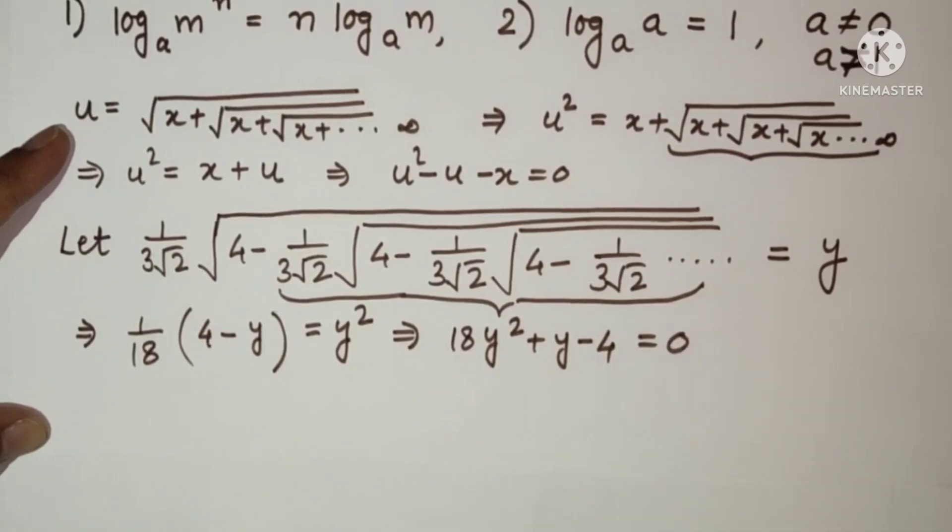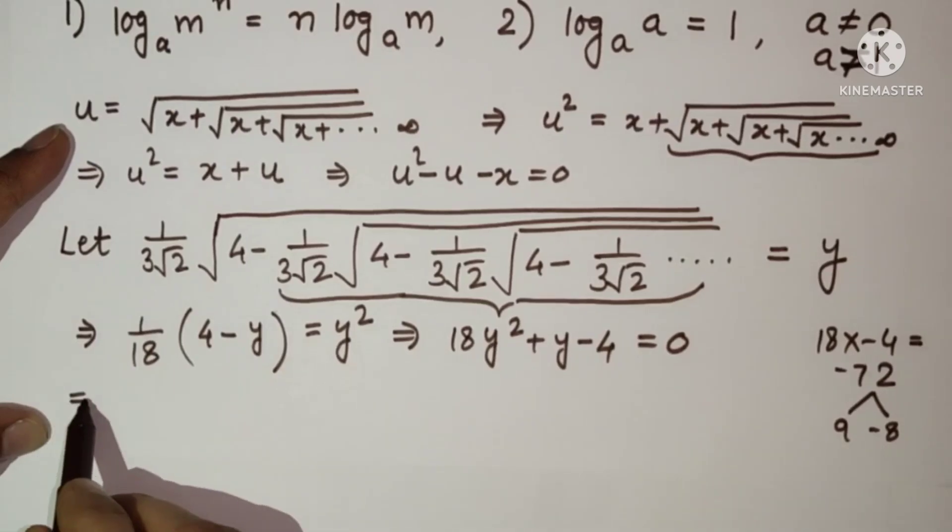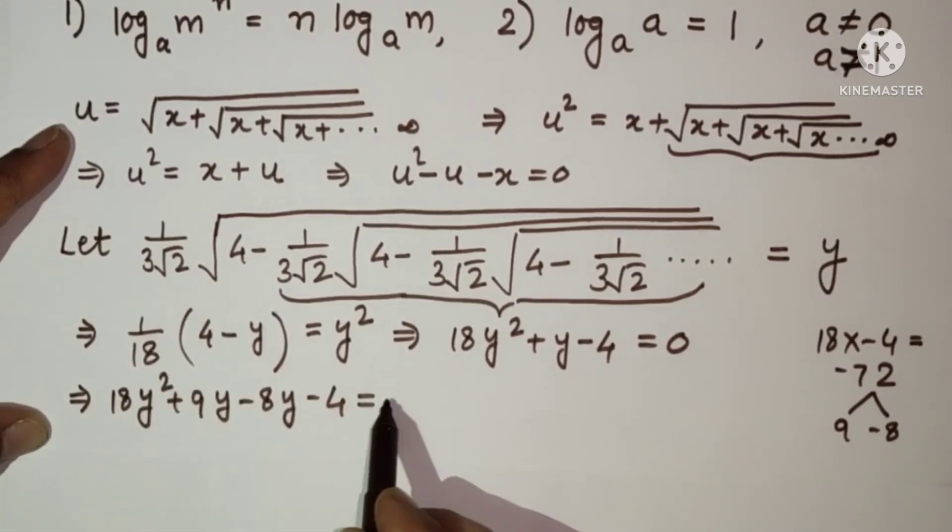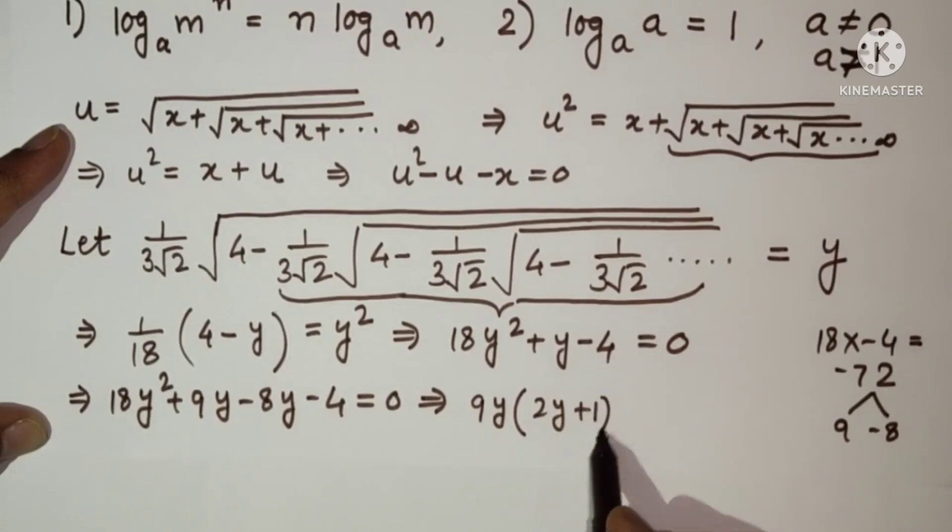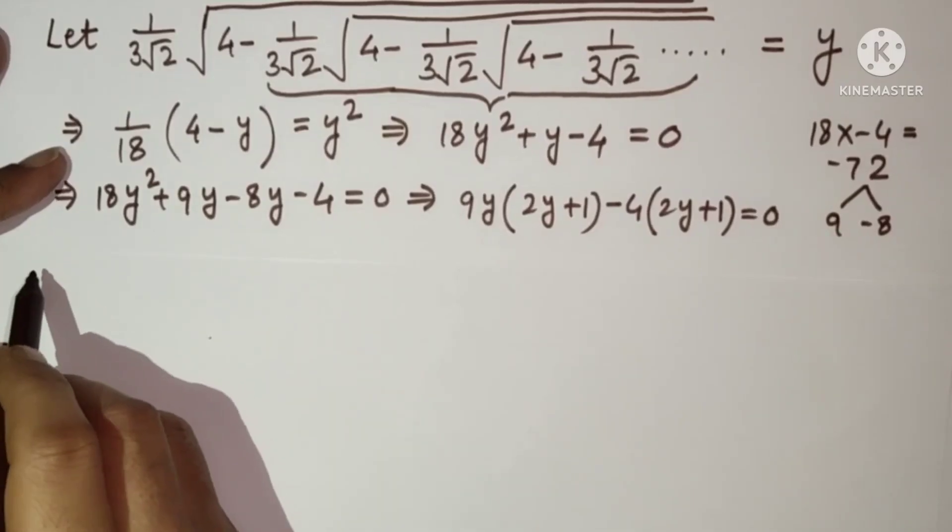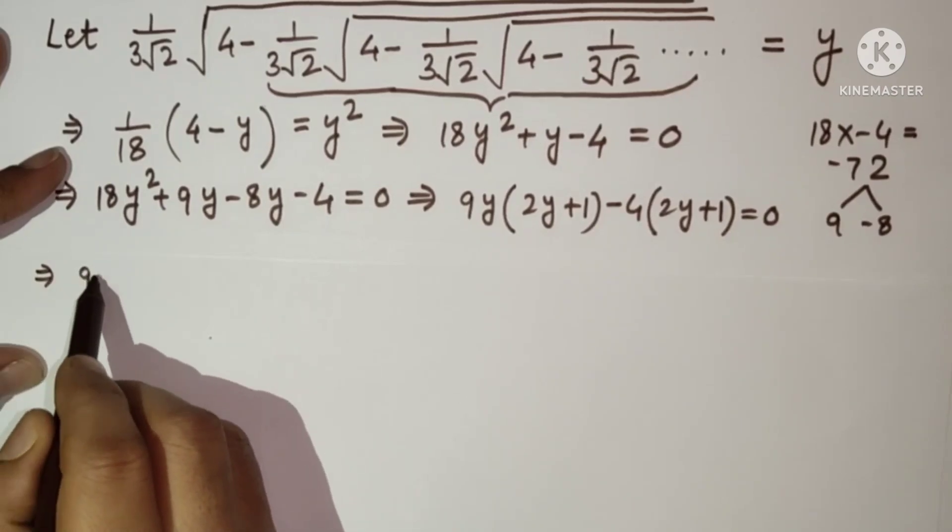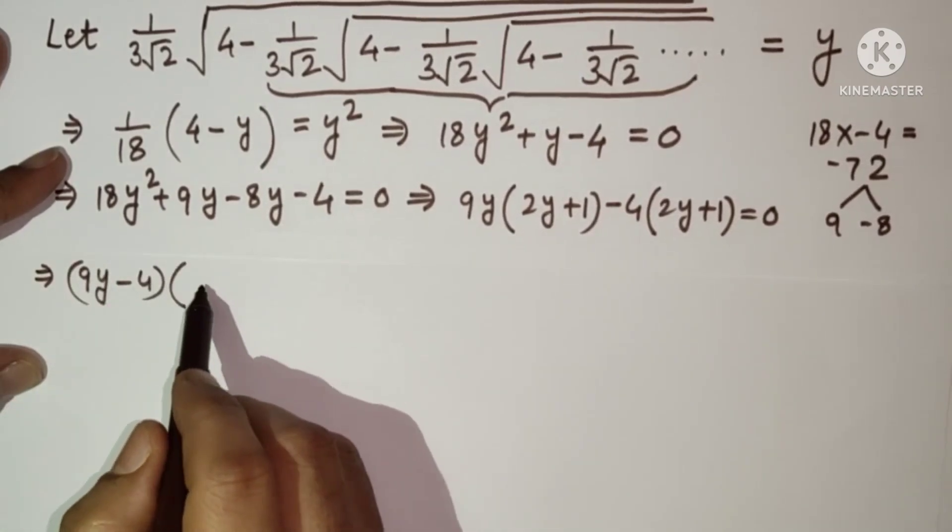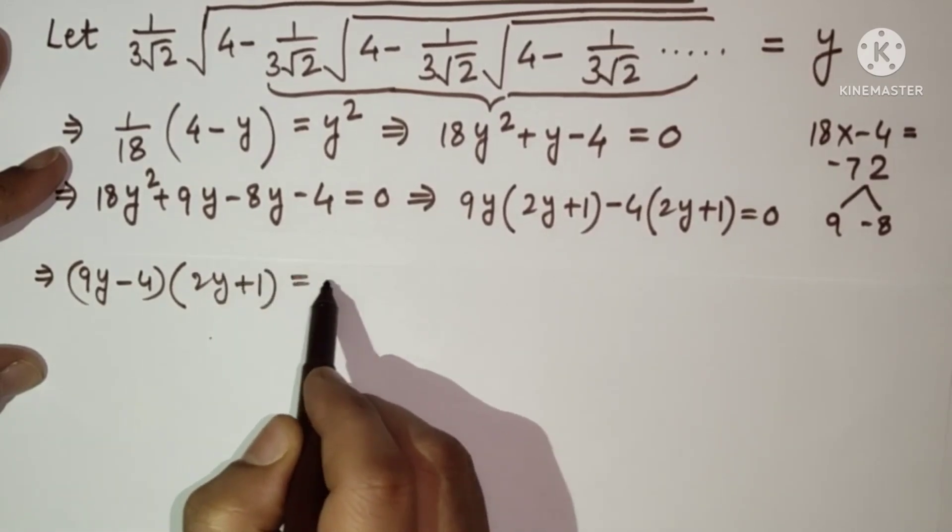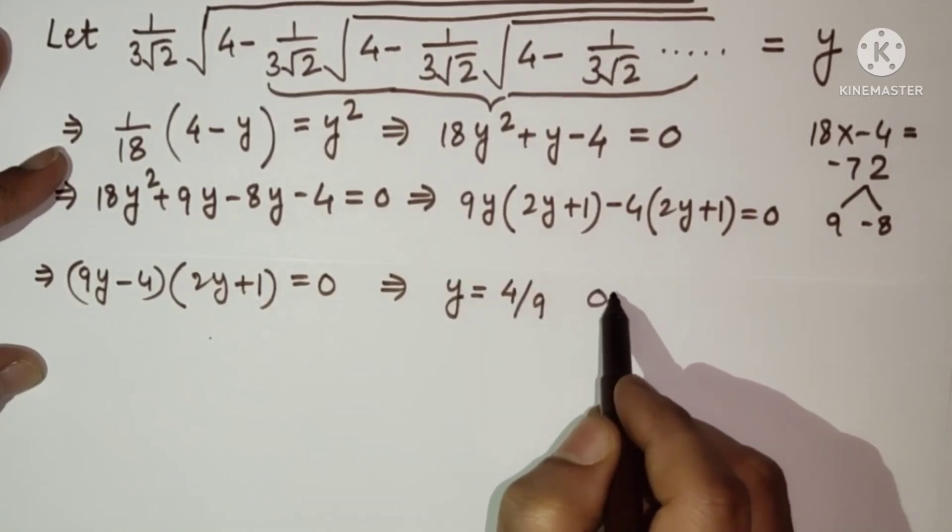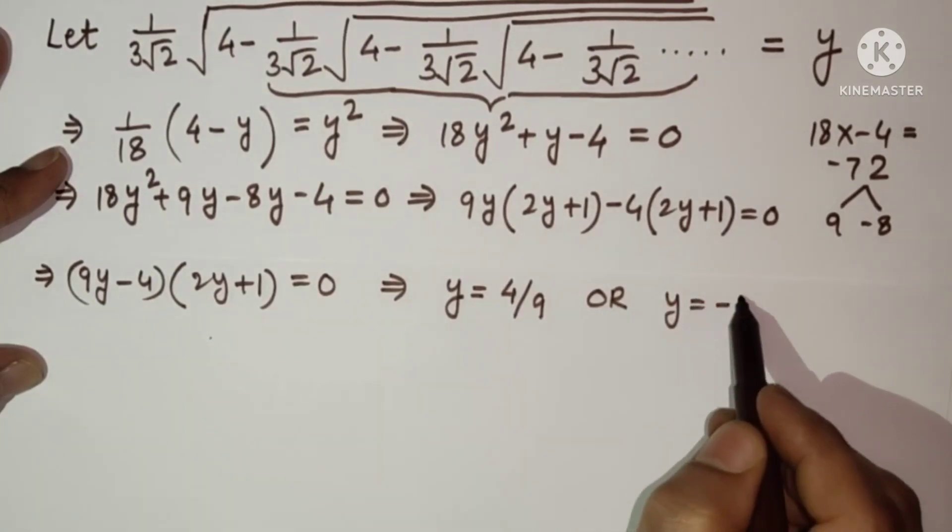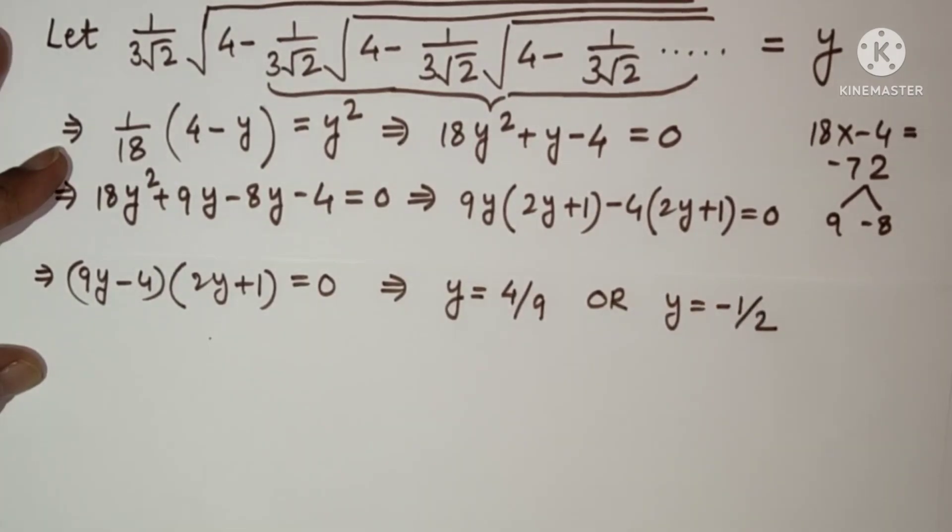So 18 into minus 4 will give you minus 72 and the two factors. So splitting the middle term: 18 y square plus 9y minus 8y minus 4 is equal to 0, which gives 9y common 2y plus 1. So we found 9y minus 4 in one bracket, 2y plus 1 in other bracket is equal to 0, which gives y is equal to either 4 by 9 or y is equal to minus half.